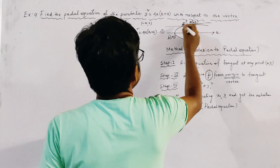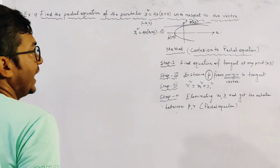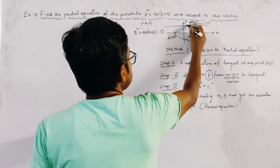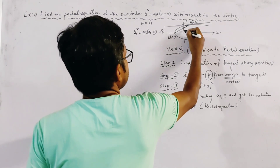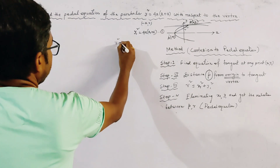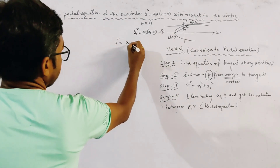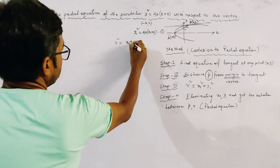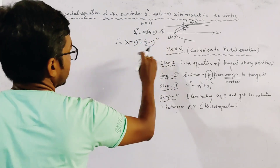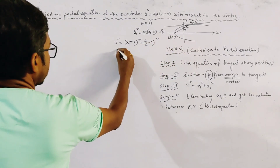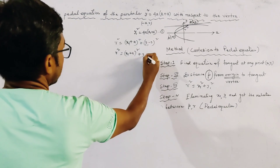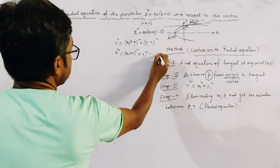We draw a tangent at P, and then the distance of this point from the vertex is R. So R² = (x1 - (-a))² + (y1 - 0)², which gives R² = (x1 + a)² + y1². This is Relation 2.